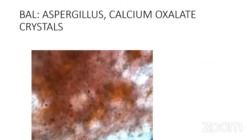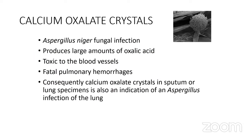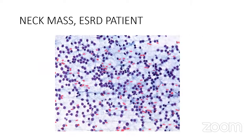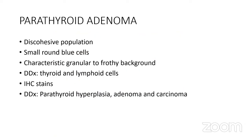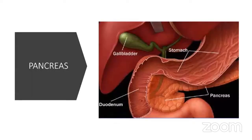On BAL, calcium oxalate crystals suggest aspergillus niger — a classic test question. A neck mass in a patient with end-stage renal disease on dialysis showing small round blue cells with a frothy background should raise the possibility of an enlarged parathyroid gland — which could be adenoma, hyperplasia, or carcinoma. Features include a decisive population of small round blue cells with granular or frothy background; perform parathyroid stains for confirmation.